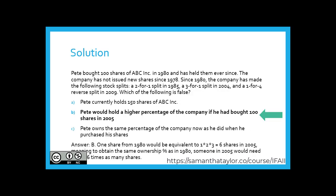If you said B — Pete would hold a higher percentage of the company if he bought 100 shares — you would be correct. One share from 1980 would be equivalent to one times two times three, which equals six shares in 2005. To obtain the same ownership percentage as in 1980, someone in 2005 would have had to buy six times as many shares. A is correct because 100 shares from 1980 equals 600 shares by 2005, and then 600 divided by four in 2009 equals 150. So Pete currently does hold 150 shares of ABC Inc.